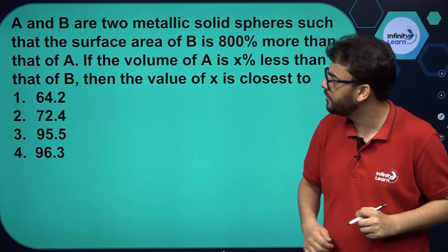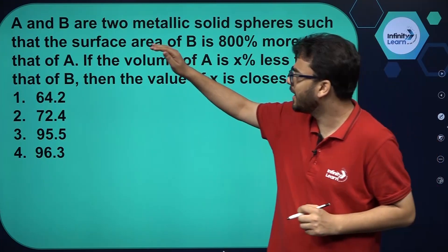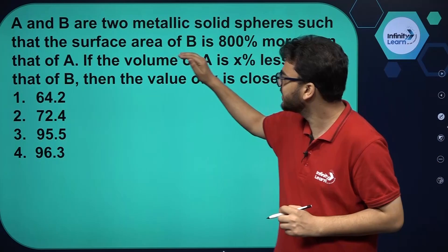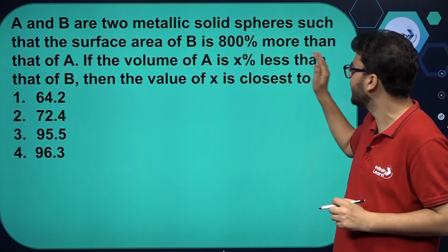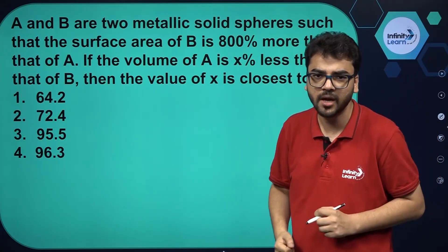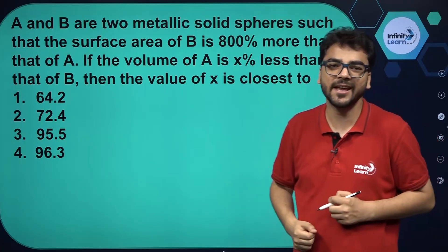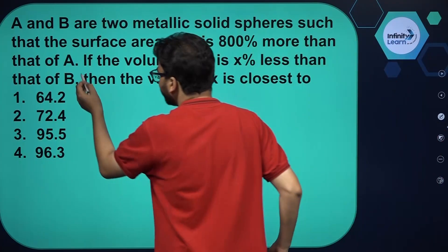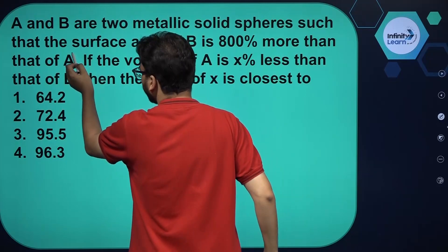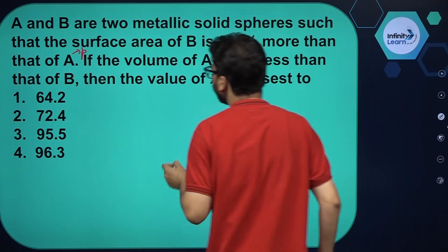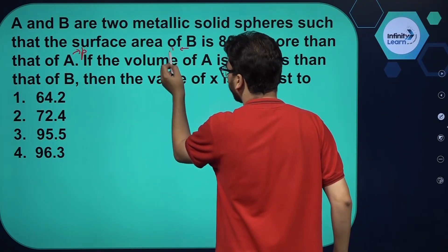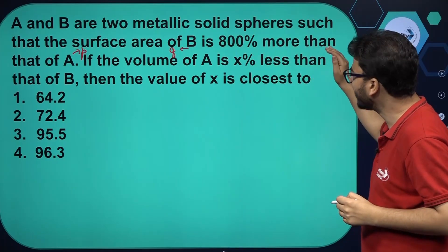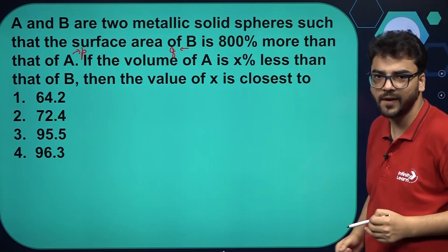We have a question in which A and B are two metallic solid spheres such that the surface area of B is 800% more than that of A. We are talking about surface areas of spheres. Suppose the radius of sphere A is P and the radius of sphere B is Q. It is given that the surface area of B is 800% more than that of A.